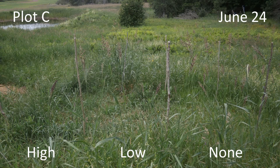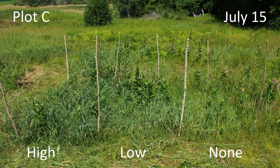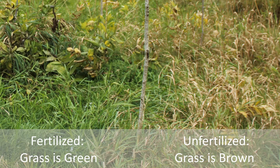Late in the summer, I noticed that a plant we call tangleweed had moved into some areas of plots B and D. At the end of this year's experiment in early October, after a couple of frosts, the grass which had been fertilized seemed substantially greener and not at all dried out and dead like the grass in the unfertilized areas.